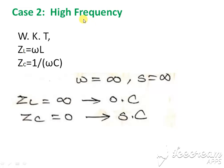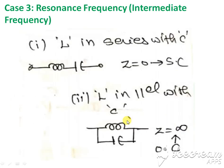Case two is for higher frequency. Using the same formulas, when omega is equal to infinity, substituting gives Z_L equal to infinity, meaning the inductor is an open circuit. Substituting omega equal to infinity in Z_C gives Z_C equal to zero, meaning the capacitor is a short circuit.